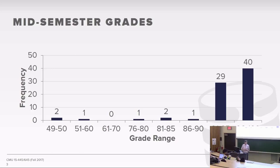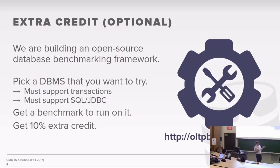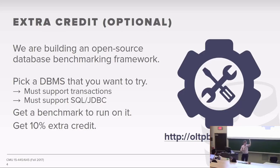Going out today will be information about the extra credit assignment. The extra credit assignment is for you to pick some database management system you want to play with, get one of our benchmarks running in our open source benchmarking framework called OLTP Bench, get that benchmark to run on your system, get it to run as fast as possible, and we'll set up a leaderboard to see how fast you are compared to other systems.